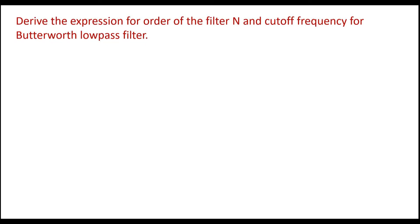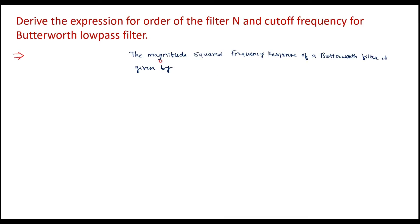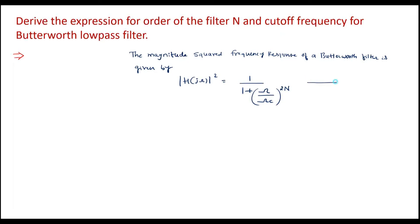In this video I am going to derive the expression for order of the filter n and cutoff frequency for Butterworth low pass filter. The magnitude squared frequency response of a Butterworth filter is given by: |H(jω)|² = 1 / (1 + (ω/ωc)^(2n)). Here n is the order of the filter, ωc is the cutoff frequency, and ω is the frequency. We call this equation 1.